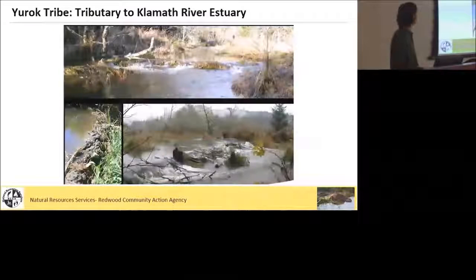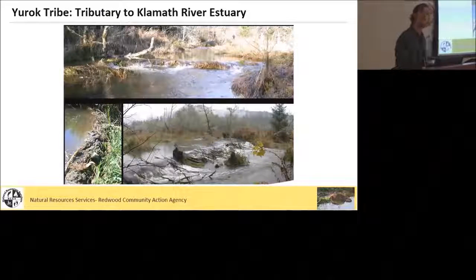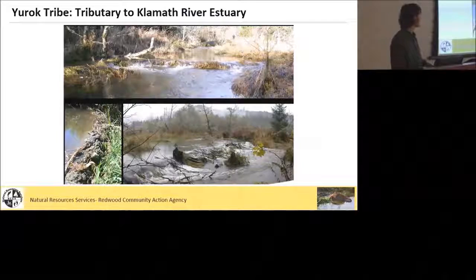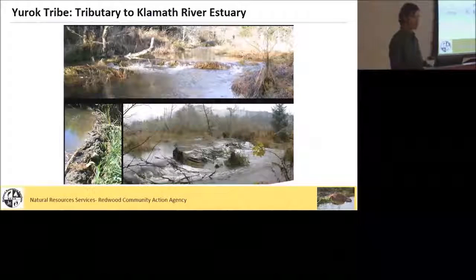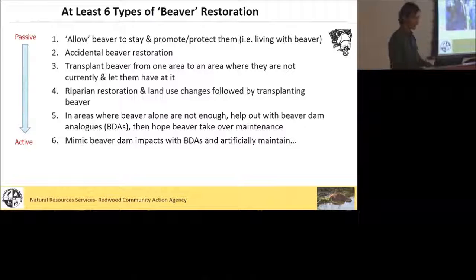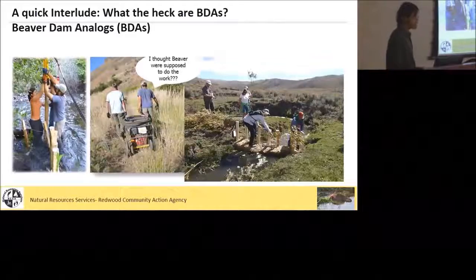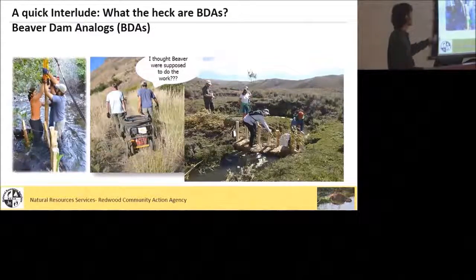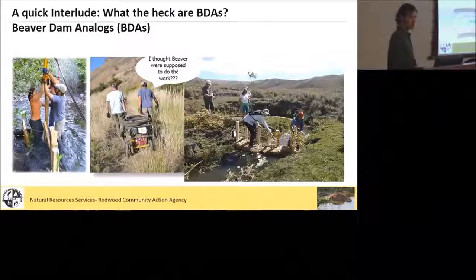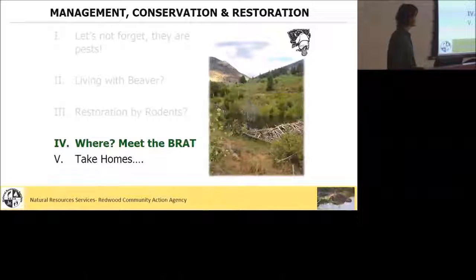For example, the Yurok Tribe right now is working with Rocco Fiore on a tributary to the Lower Klamath River estuary where they have some natural beaver dams. Essentially beaver are already there and they're working with them to try and improve habitat for coho. There are a variety of different ways to do this, going from a real passive approach — just let them be — all the way to building artificial beaver dams and maintaining them yourself. Beaver dam analogs are simple in-stream structures meant to mimic the form and function of beaver dams, and you can build them using manual labor or a hydraulic post-pounder, and you can build a lot of them very quickly. They're meant to work together in complexes similar to the way that natural beaver dam complexes work.